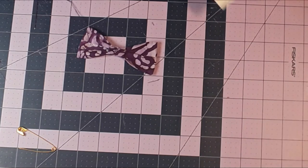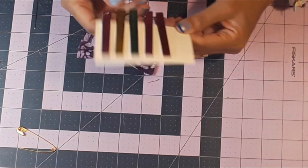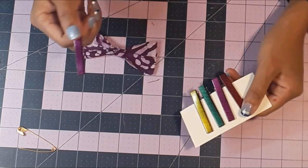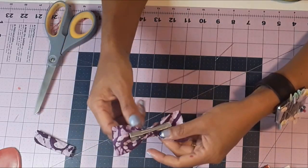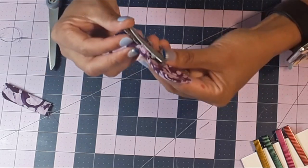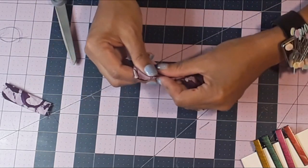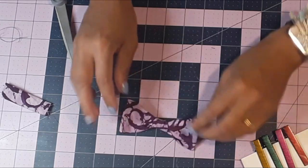You can either attach a clip or an elastic. I decided to attach a clip. You can put it under the binding tape in the middle of the bow, then secure it with a glue gun. We completed our first bow.